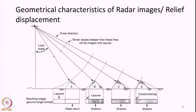An interesting example shows hills A, B, C, D — almost identical but positioned at different locations in the range direction. Hill A is very near to the antenna and the others are farther away. At point A there is a strong layover effect: the top is imaged first, then the bottom, making the top appear much further displaced from the bottom.